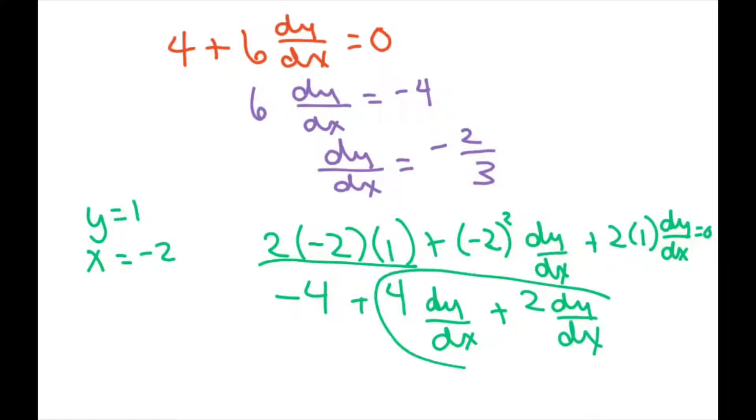So when you add those two together, you get 6. So now we have -4 + 6 dy/dx = 0. So in this case, it's the same as the previous one, but we have -4. So dy/dx equals positive 2/3.